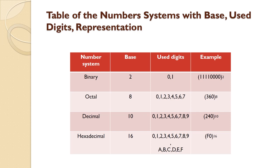Decimal number system — its base is 10. It contains the digits from 0 to 9. For example, 2, 4, 0 in subscript 10. Now, comparing the examples given in octal and decimal number system — both have digits in the range 0 to 7 and 0 to 9 respectively, but the subscript 8 and 10 represent which number system they belong to.